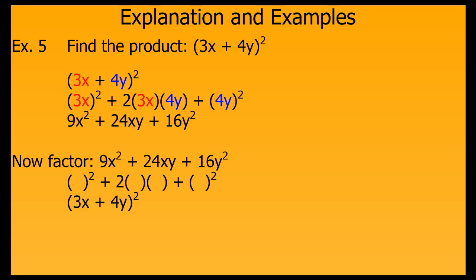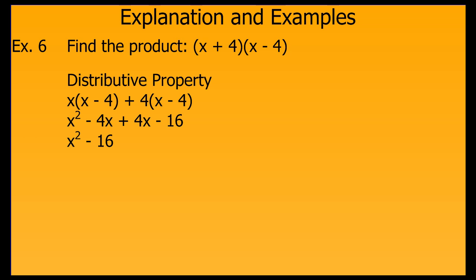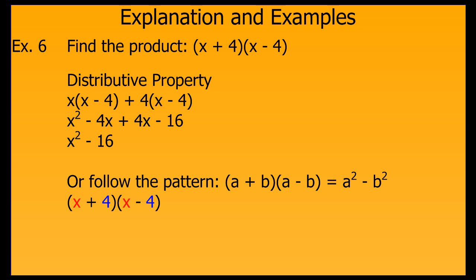Let's immediately go in reverse and factor it just to see how we can go back and forth. Example 6 is a little different — it's not a square of a binomial; it's a sum and difference product. If we recognize the pattern, quantity a plus b times the quantity a minus b, then we can get to our answer more easily. It's simply going to be x squared minus 4 squared, or x squared minus 16 — same answer as the distributive property, but if you recognize the pattern, you can jump right to the answer.